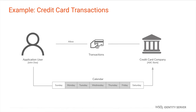Similarly, consider a situation where your job requires you to travel abroad frequently. Each time you travel, you have to request your credit card company to whitelist your credit card transactions. Instead, you can use UMA to share your calendar with restricted access to the credit card company. The credit card company in turn will automatically whitelist your transactions whenever you go abroad.